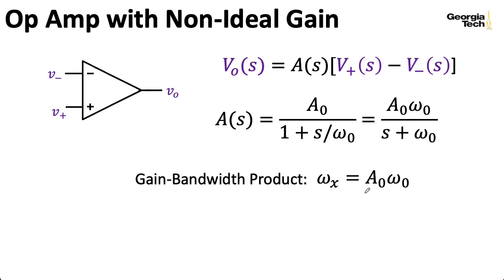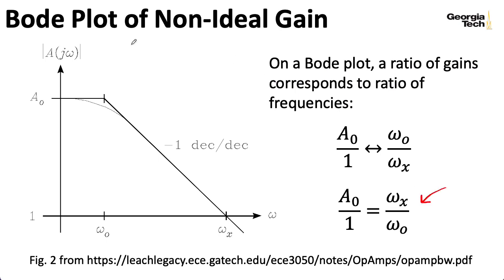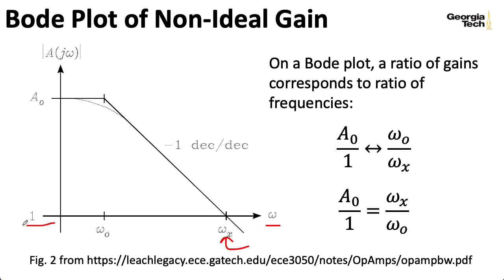We defined something called the gain bandwidth product, which was A-naught times omega-naught. This particular gain bandwidth product has everything represented in terms of radians per second. You could divide by 2-pi to write everything in terms of hertz, using the letter F. On a Bode plot, a ratio of gain corresponds to a ratio of frequencies, so there's a negative-going slope, and if you plug in the gain bandwidth product for omega, you wind up with unity gain. In a previous lecture, we saw that the non-inverting amplifier configuration gave you the full gain bandwidth product, but we'll see that for the inverting configuration, we don't get all of that.